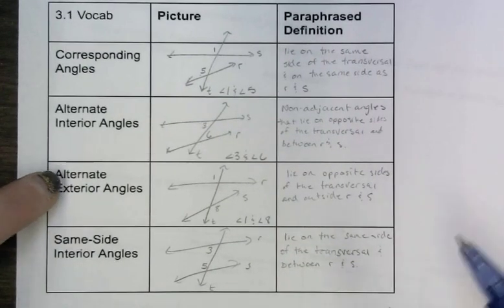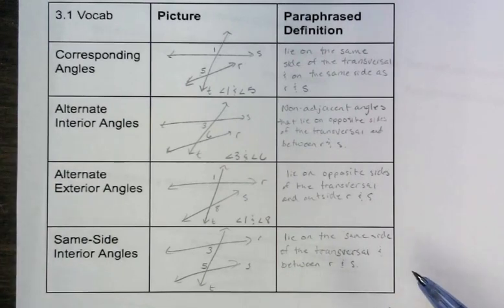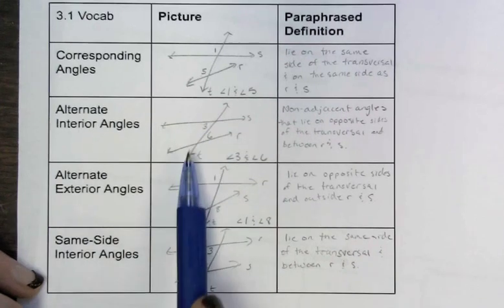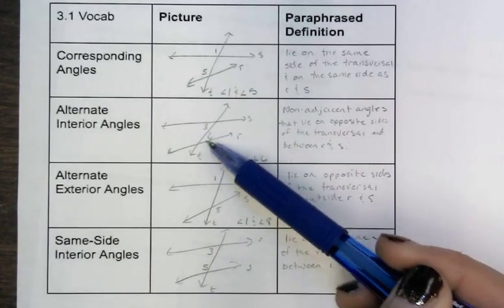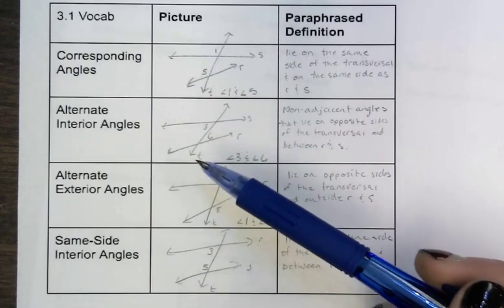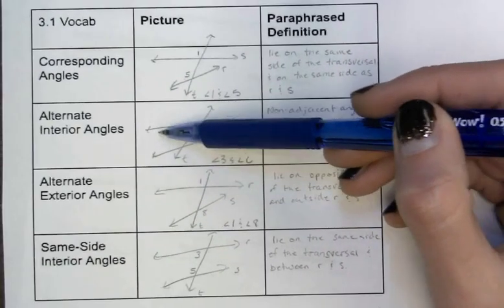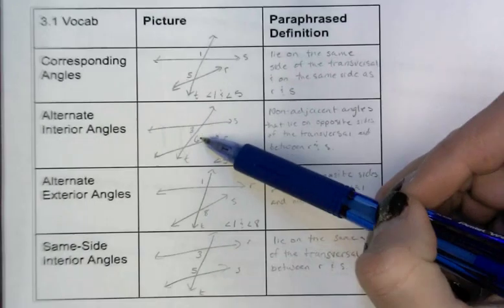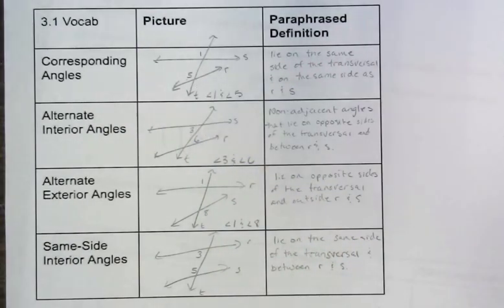The next type is alternate interior angles — this one's easier to tell from the name. Alternate means either side of the transversal, so angles 3 and 6 are on opposite sides, which is what alternate stands for. Interior means it's in between my two lines. So 3 and 6 are alternate interior because they're on either side of the transversal and they're in between R and S.